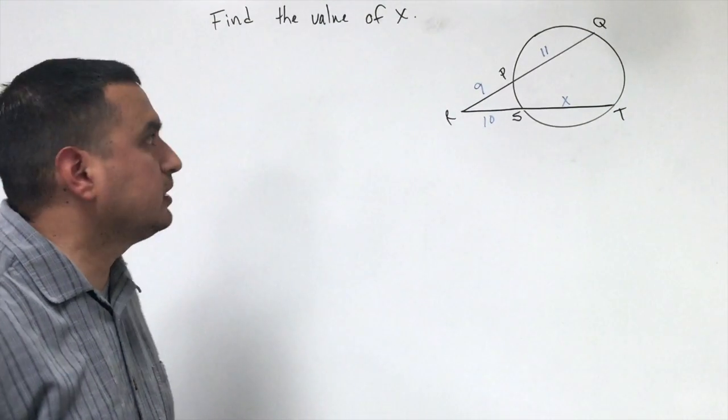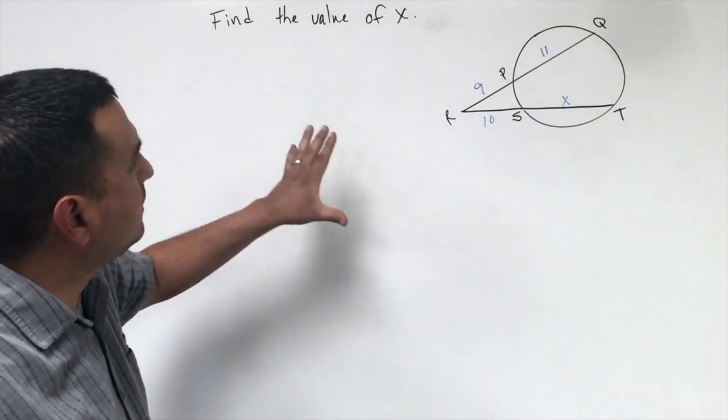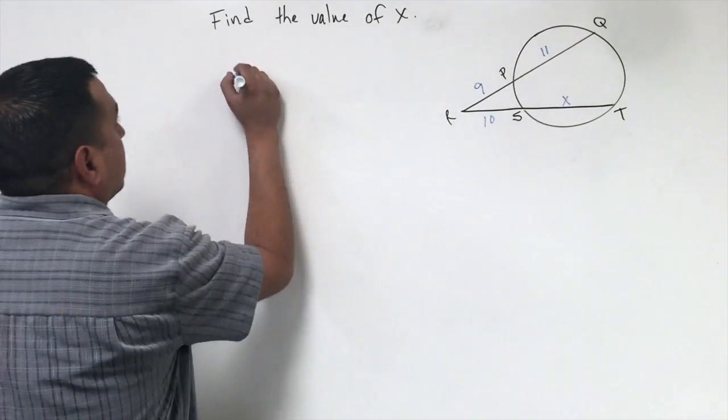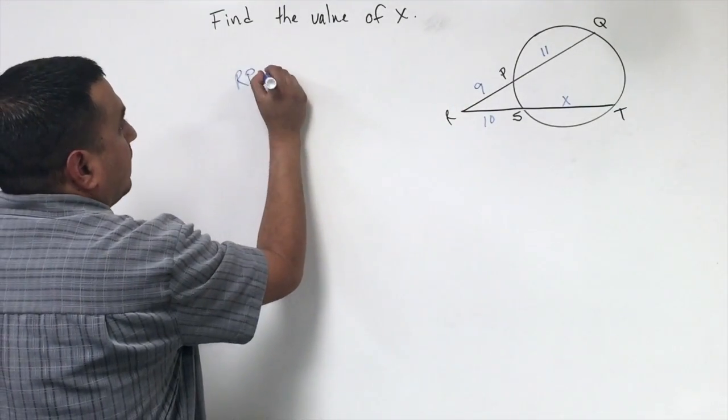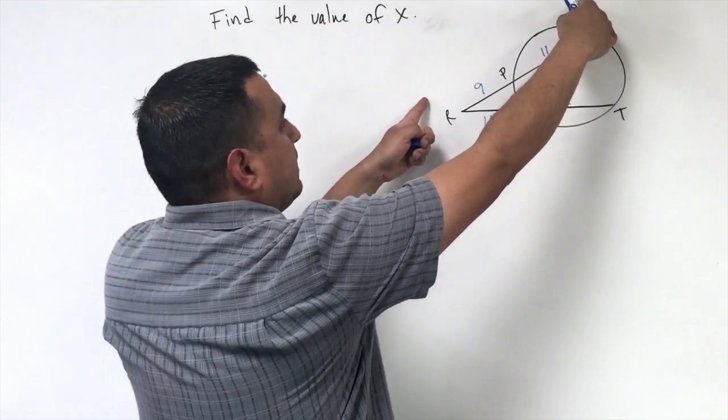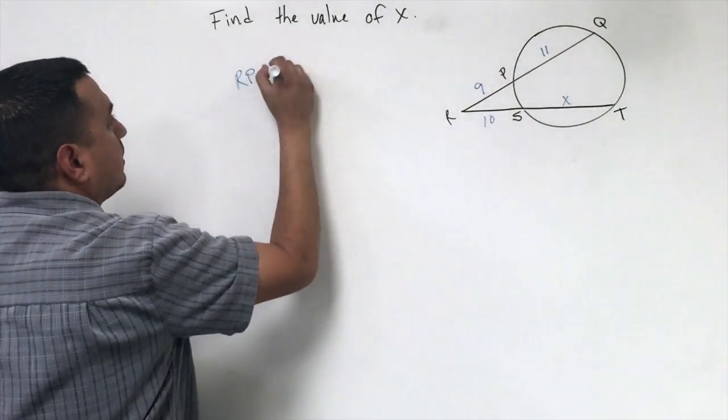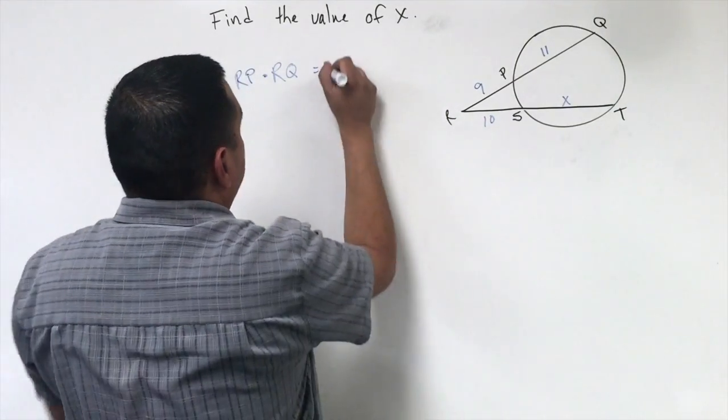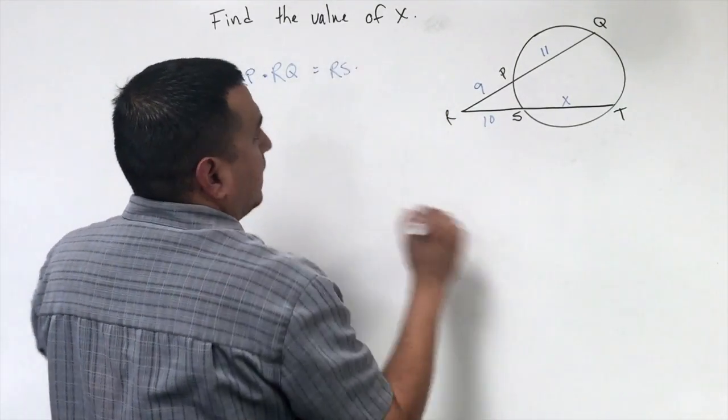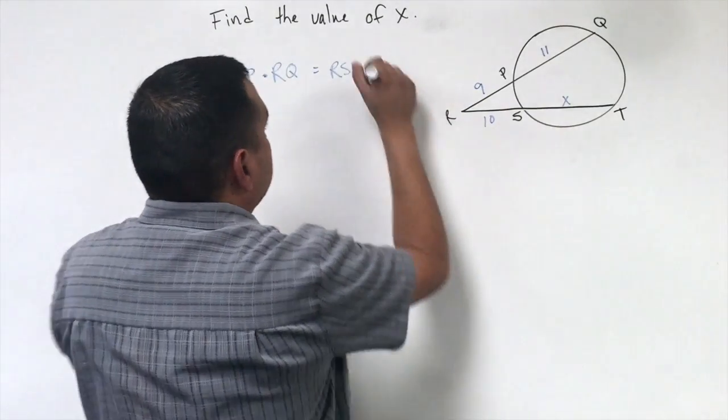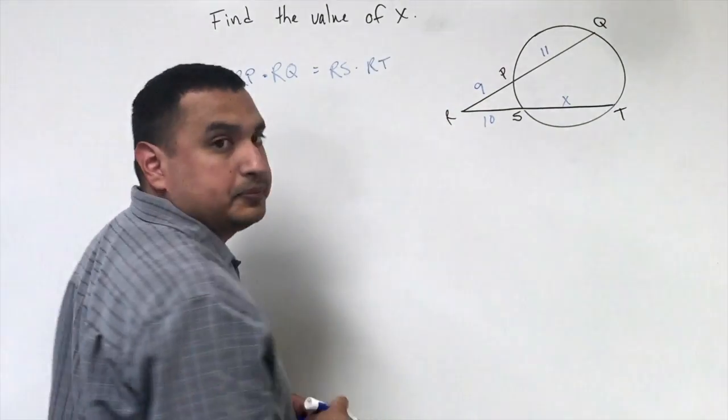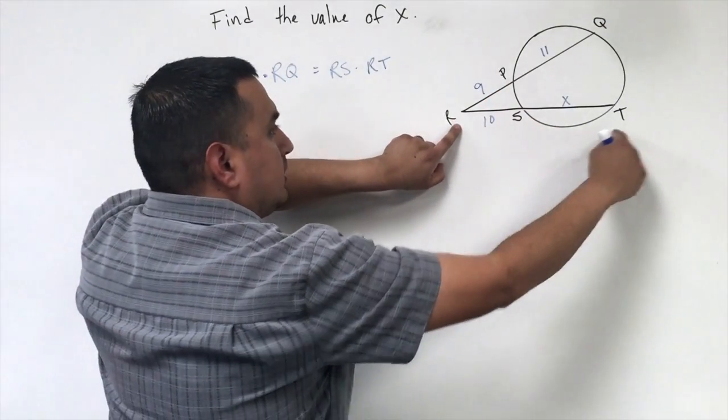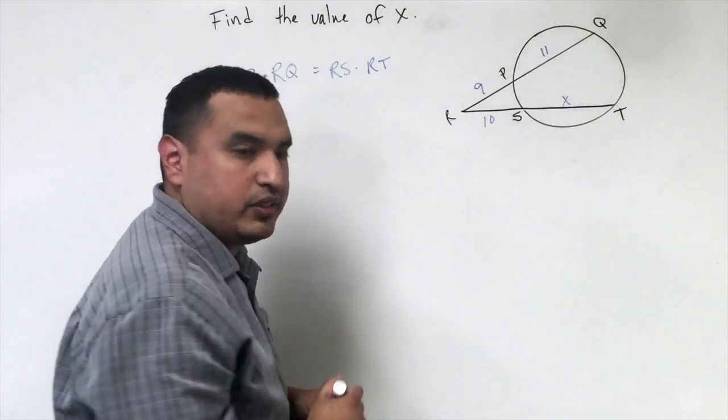So now we have the segments of secants theorem. And so with that said, I can take this outside piece, which is RP, and if I multiply it to this entire length of RK, that's going to equal this outside portion, the RS, times the entire length of RT. So the outside times the entire length is equal to the outside times the entire length of the other secant.